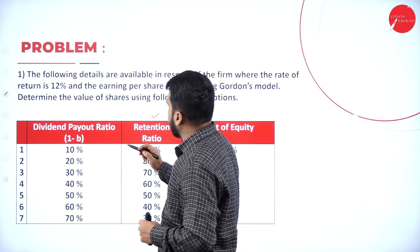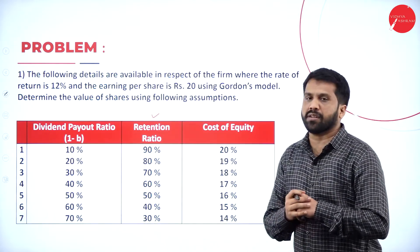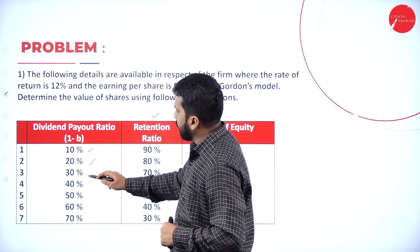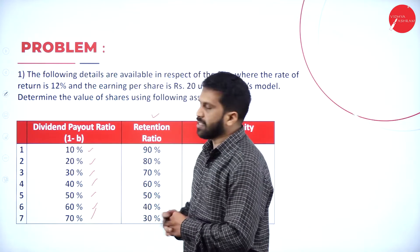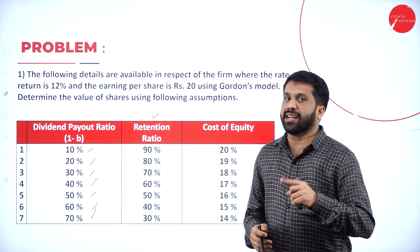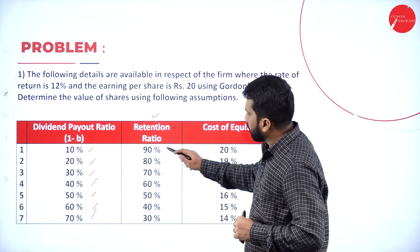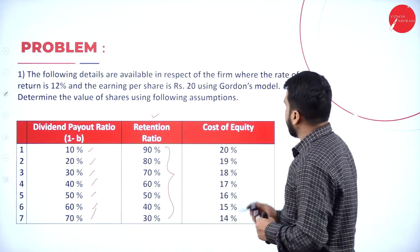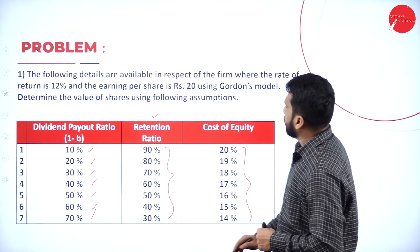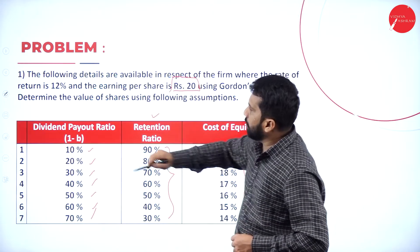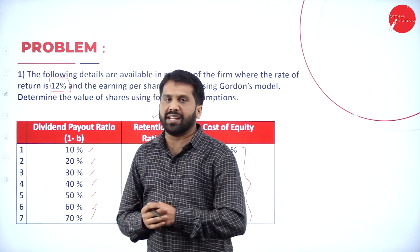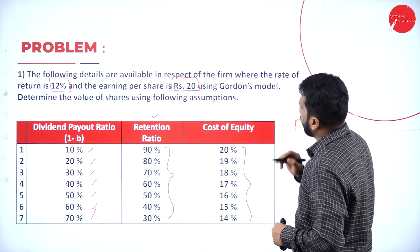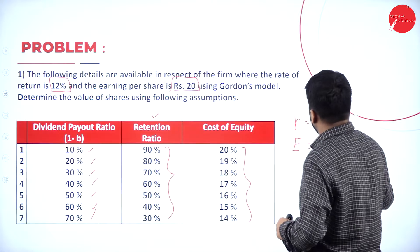As per this, the dividend payout ratio is 10%, 20%, 30%, 40%, 50%, 60%, 70%. As per Gordon's model, we also get the retention ratio. Retention is simply 100% minus the dividend payout. So retentions are 90%, 80%, 70%, 60%, 50%, 40%, 30%. Along with that, we have cost of equity at 20%. The rate of return is 12%, and earnings are 20.